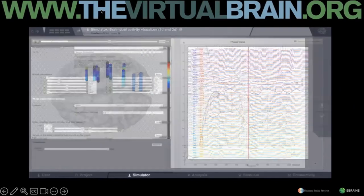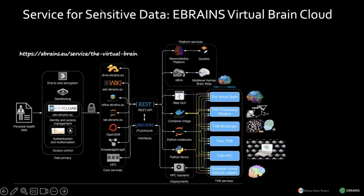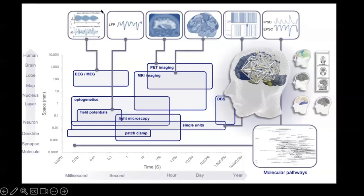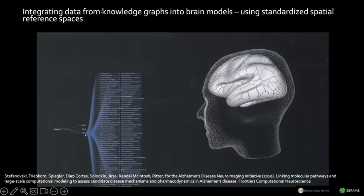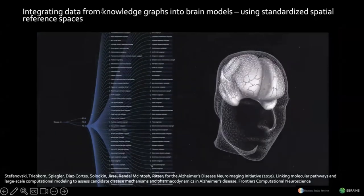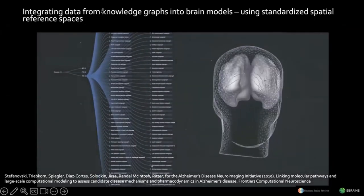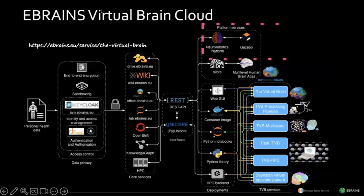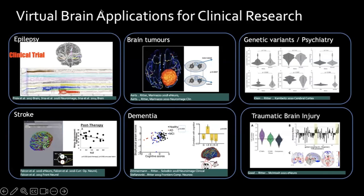The TVB GUI covers all the temporal and spatial scales of brain research. With multi-scale simulation we can tap into finer scales, and with our large-scale TVB models we can reach towards the causal scales. This is also a service in eBrains.